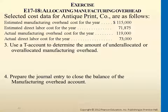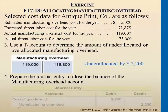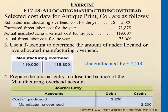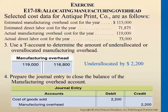At the same time, we reduce the manufacturing overhead account to zero — we close this account as well. This journal entry only happens at the very year end, when we actually know the cost incurred and compare against all the costs that we assigned throughout the year. This is an adjusting entry that happens at year end.